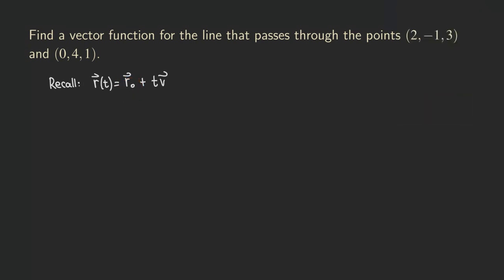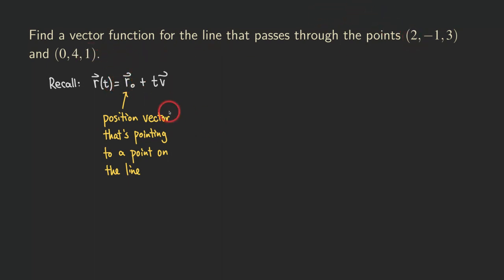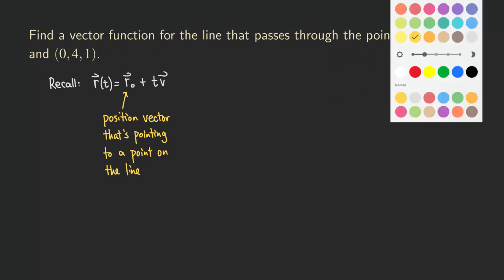So what is R naught? R naught is actually the position vector. Its initial point is at the origin, and it's pointing to a point that's on the line. So this is the position vector pointing to a point on the line. We can pick either point for this vector — it doesn't matter which one you choose.